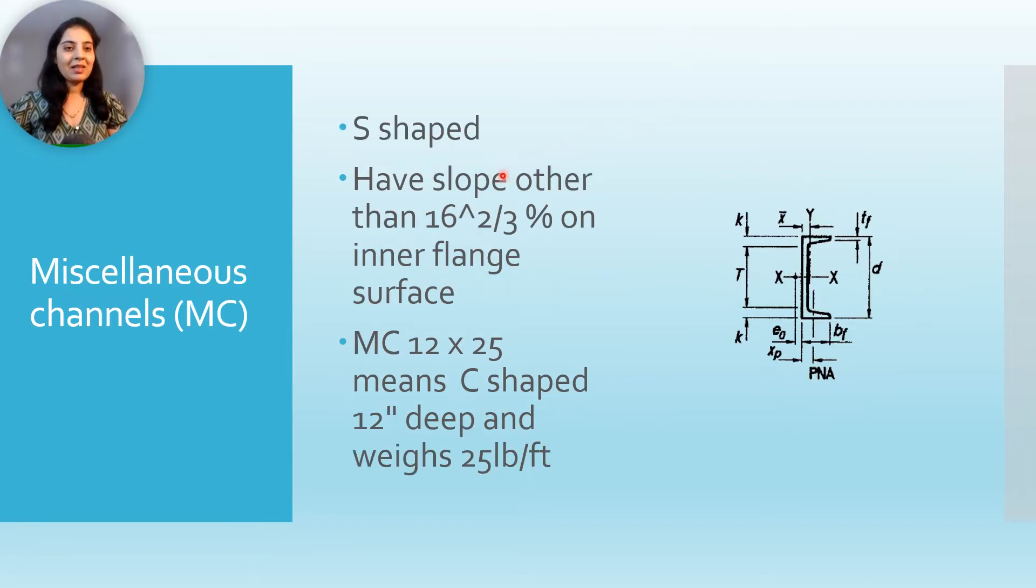Miscellaneous channel shapes, they are S shape. They have slope other than 16 to the power 2/3 percentage on inner flange surface and designated as MC 12 by 25 means C shape 12 inches deep and weighs 25 pounds per feet. This is the diagram from the construction manual.